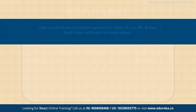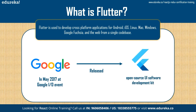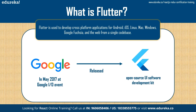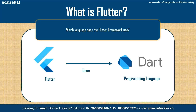Now let's talk about Flutter. In May 2017, at the Google IO event, Google released an open-source UI software development kit known as Flutter. Flutter, just like React Native, is used to develop cross-platform applications for Android, iOS, Linux, Mac, Windows, Google, and the web from a single code base. In terms of timeline, Flutter came two years after React Native. Flutter uses Dart, which is a fairly new programming language, especially when you compare it to something that has been around for a long time, like JavaScript.